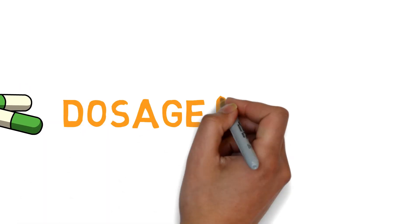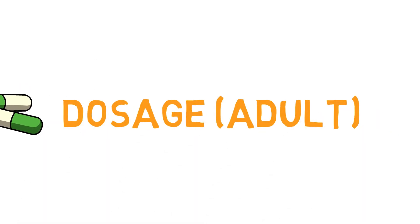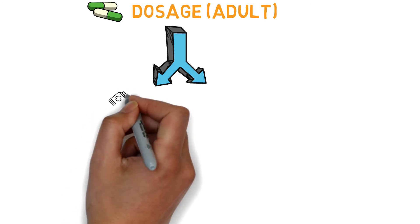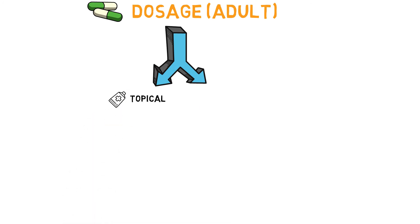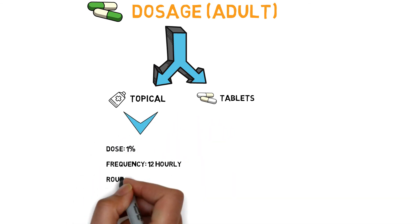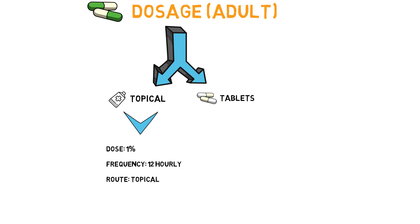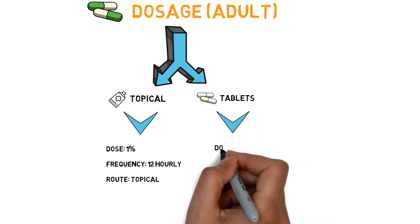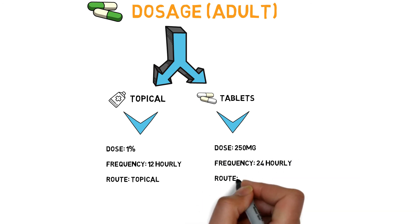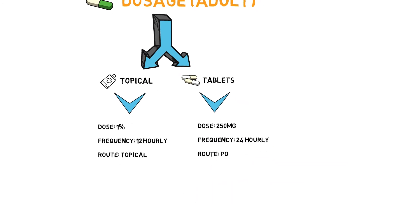Now dosage. Adult dosage is divided into two types: topical and tablet form. The topical form dosage is 1%, frequency 12 hourly, and route topical. The tablet form dosage is 250 mg, frequency 24 hourly, and route oral.